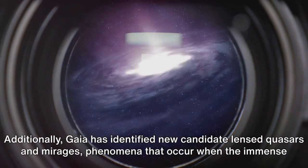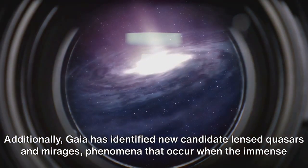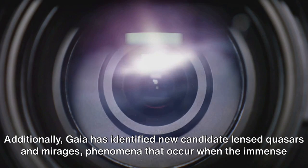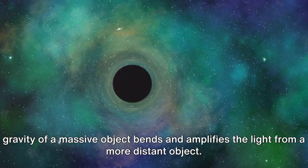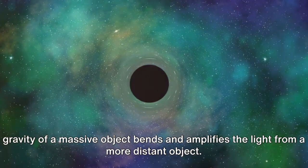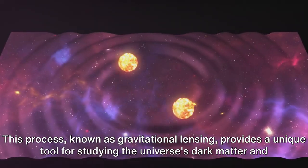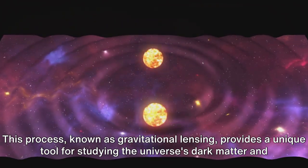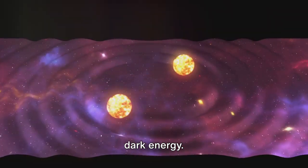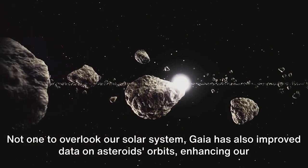Additionally, Gaia has identified new candidate-lensed quasars and mirages, phenomena that occur when the immense gravity of a massive object bends and amplifies the light from a more distant object. This process, known as gravitational lensing, provides a unique tool for studying the universe's dark matter and dark energy.